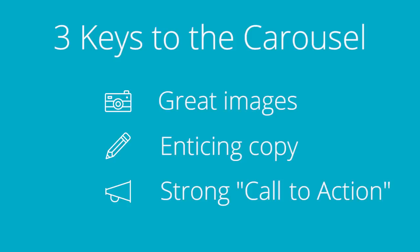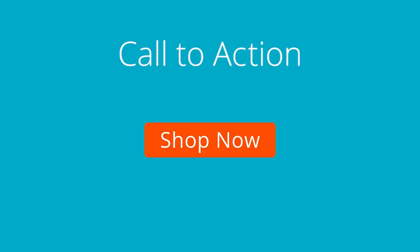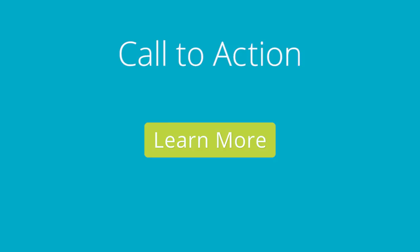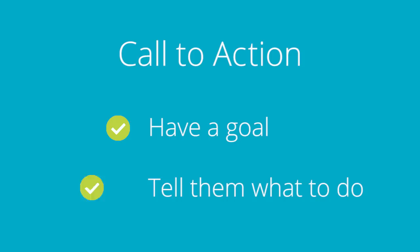A call to action, or CTA, could be something like 'shop now' for your most popular product. You can also test things like 'add to cart,' 'buy now,' or 'learn more.' So long as your CTAs are direct and make sense, you're likely heading down the right path. You want to have a goal and then tell shoppers exactly what to do, so they do it.